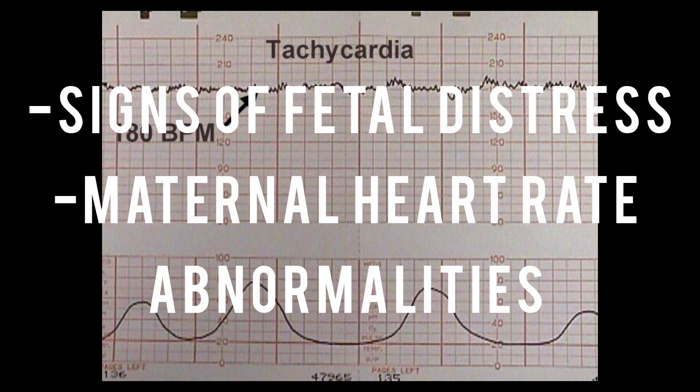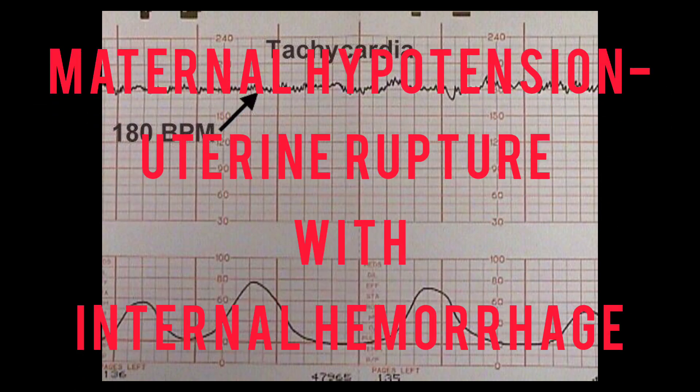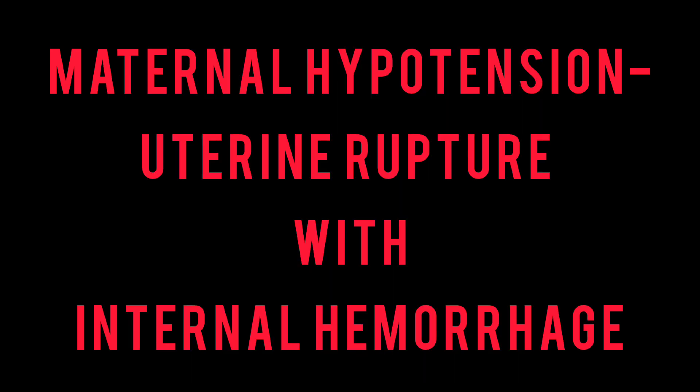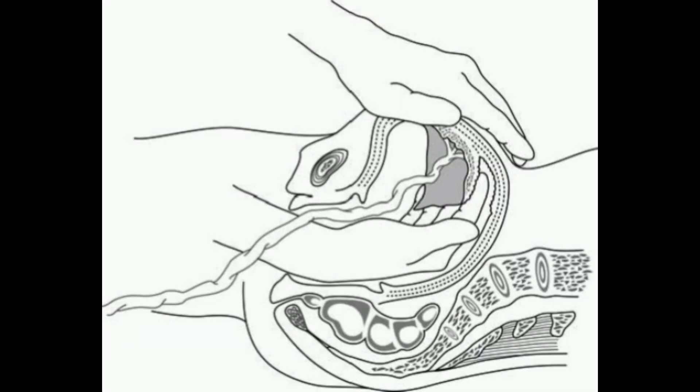Abnormal fetal heart tracing — baseline bradycardia, tachycardia, variable and late decelerations, and maternal tachycardia — are suggestive of scar dehiscence. Maternal hypotension is a late sign indicating uterine rupture with internal hemorrhage. After a successful VBAC, exploration of the uterine cavity is practiced by many.